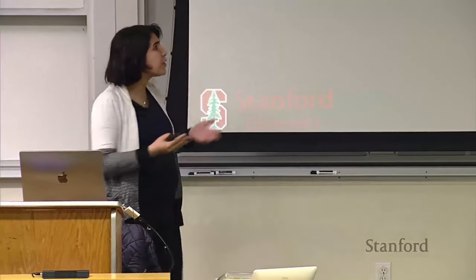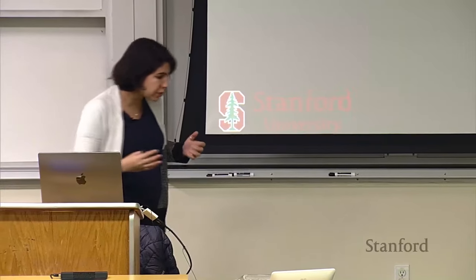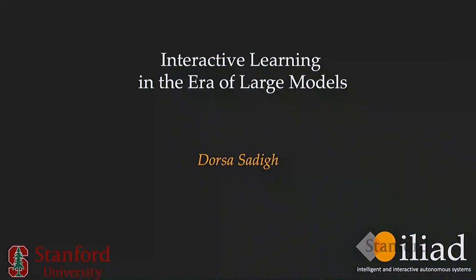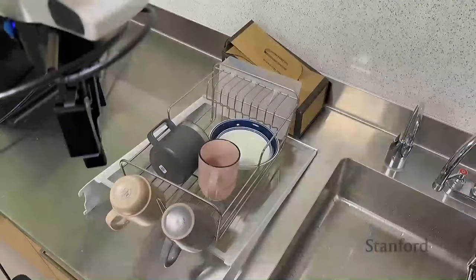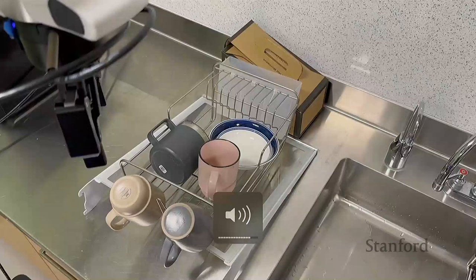A major part of this talk is focused on the robot learning side of things, but I do have connections showing how we could learn from humans and how we could think about humans in the loop as we go through the talk. Today I want to talk about interactive learning and specifically how we should think about that in the age of large pre-trained models, foundation models. To get started, I figured it would be a good idea to start with an example, and I just realized I have audio for this.